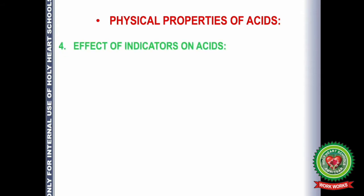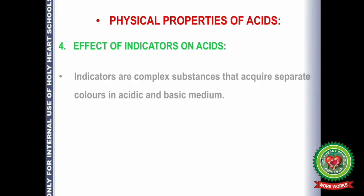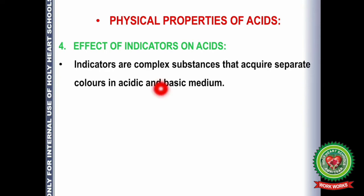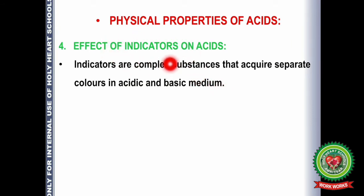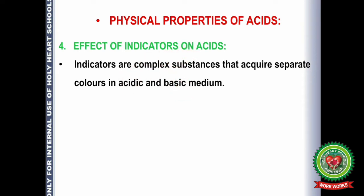The next physical property is the effect of indicators on acids. Indicators are complex substances that acquire separate colors in acidic and basic medium. An indicator will have its own color, or it can be colorless, but when it is added to an acid or base it will show a different color. We have already discussed this in the previous lecture.